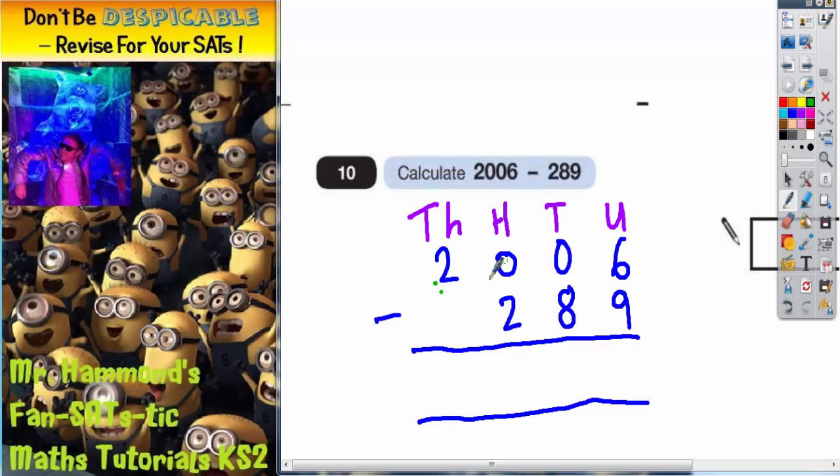So cross out two thousands and turn that into one thousand, and the one that you've borrowed needs to go over to the hundreds. It can't go straight over to the units, it can't jump across two columns and get back to the units.